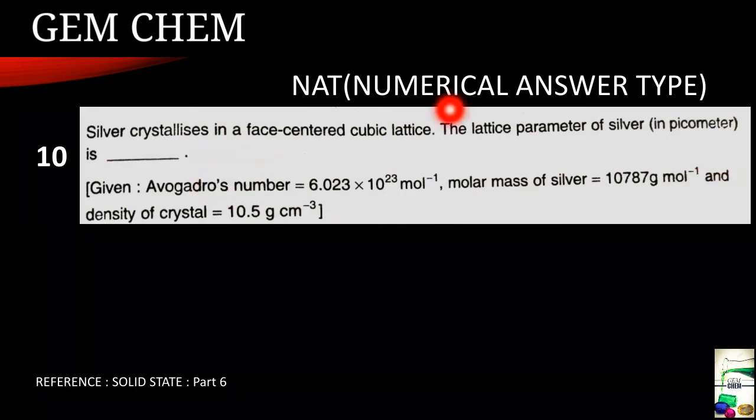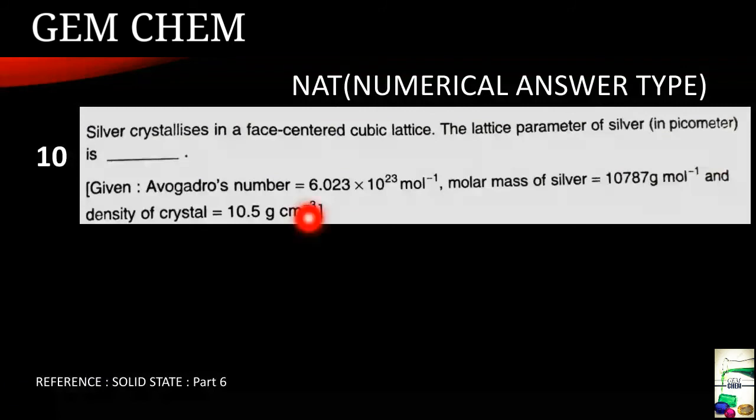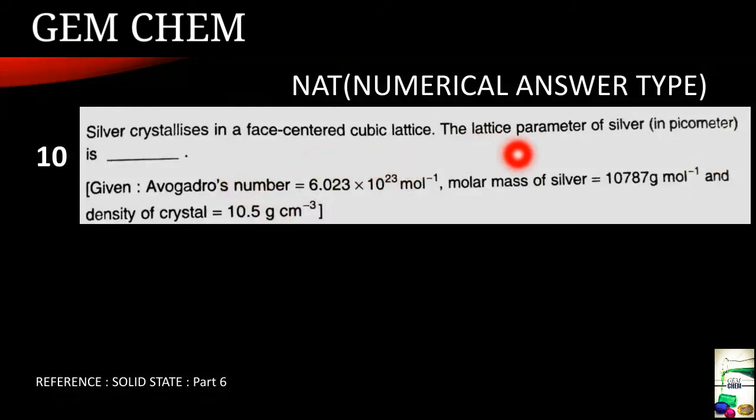Next we go for the NAT type question which is also from the solid state and it is from the solid state part 6 video. Now here basically silver crystallizes in face centered cubic lattice and the lattice parameter of the silver is asked for in picometer. Avogadro's number is given, molar mass of silver is given and density of the crystal is being given.